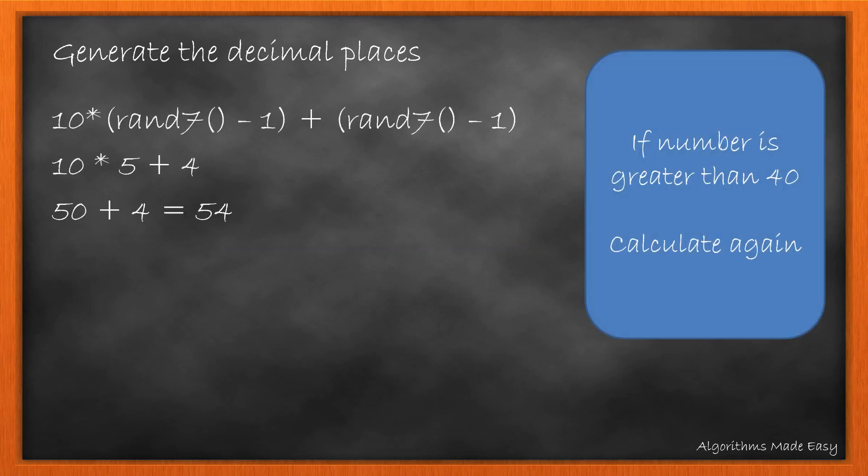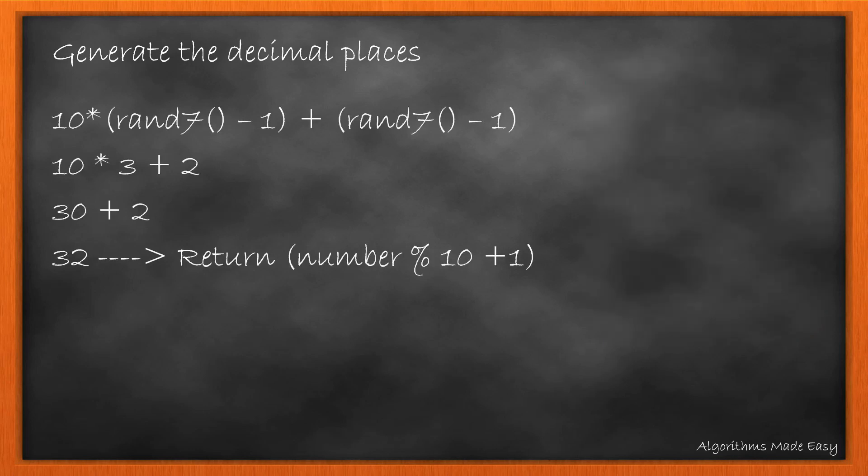Taking this example, as 54 becomes greater than 40 we need to discard this and generate a new number. 32 satisfies the condition. So we return number mod 10 plus 1 as we did in the previous approach.